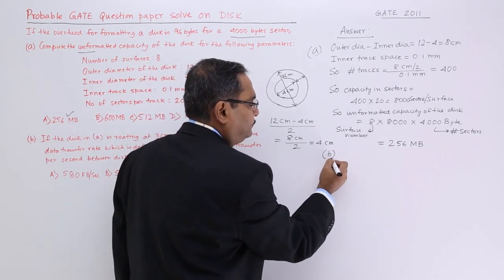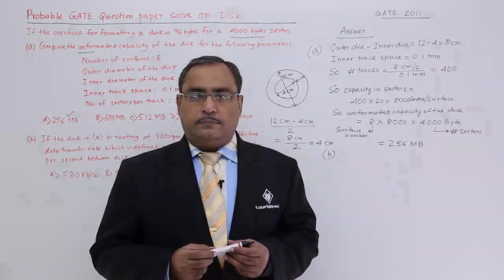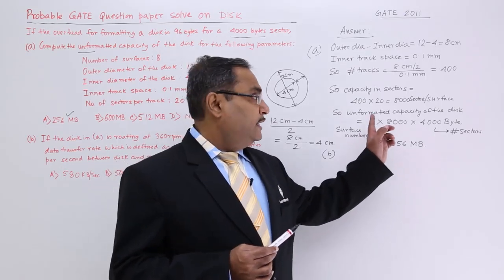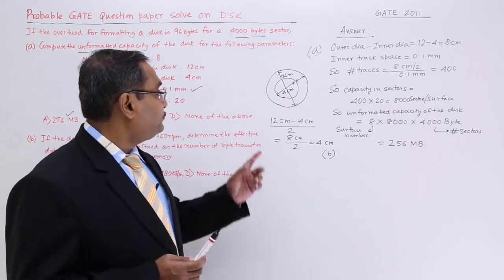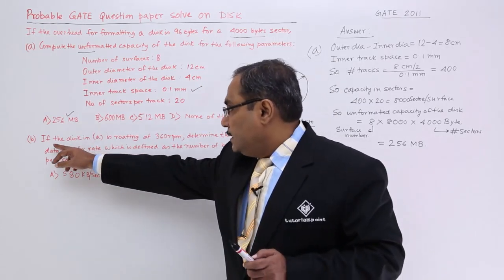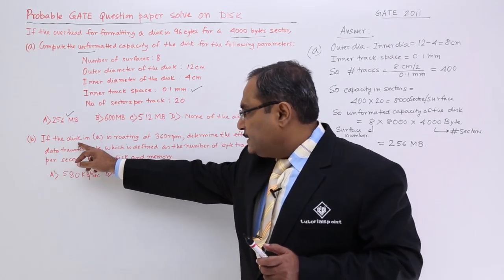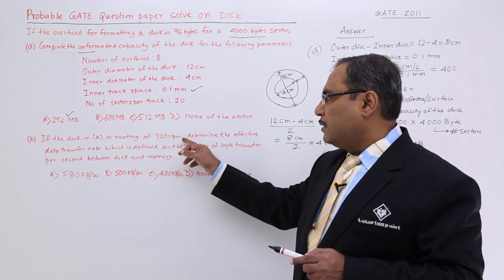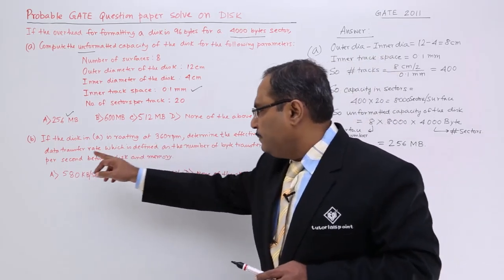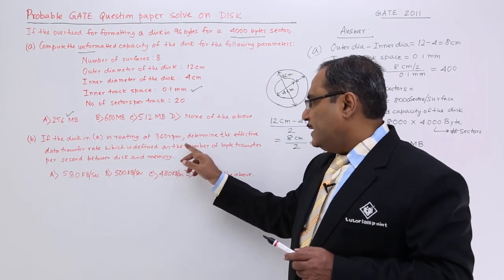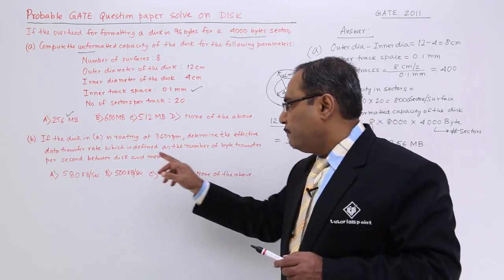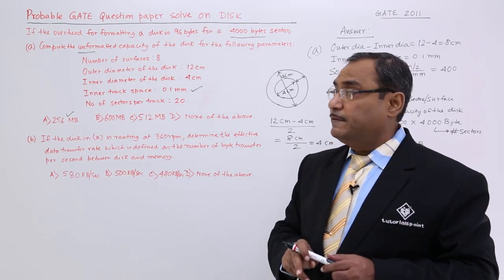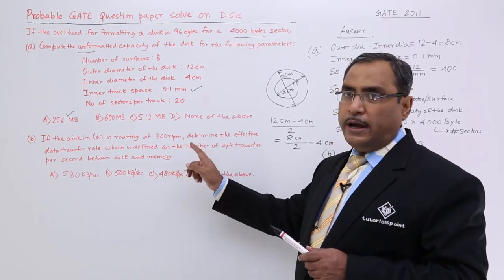Now I'll solve section B. Part B asks: if the disk in part A is rotating at 360 revolutions per minute (RPM), determine the effective data transfer rate, defined as the number of bytes transferred per second between the disk and memory.